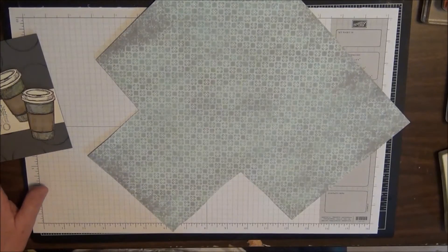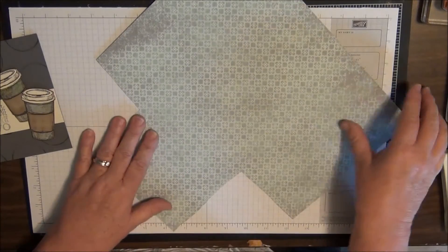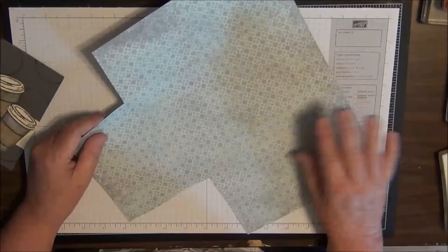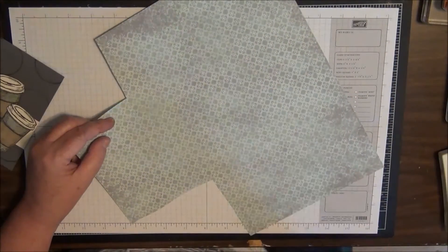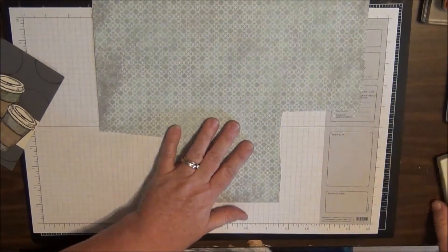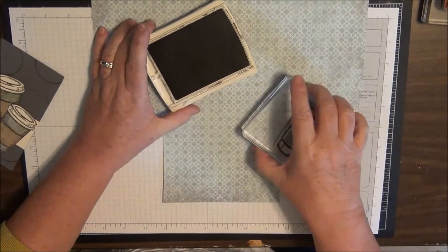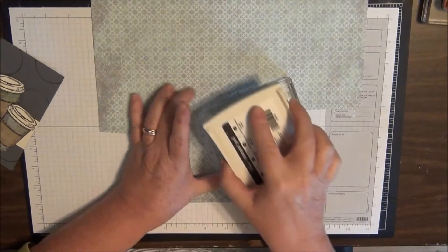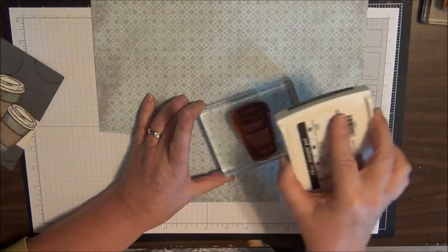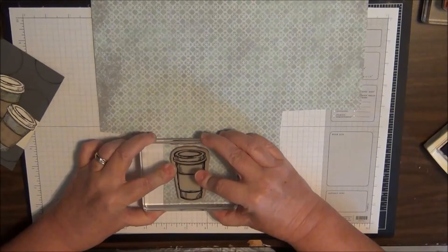It's a great time to stock up. The designer series paper you see in the catalog, once you get it in your hot little hands, looks so gorgeous - the pictures just don't do it justice. So what I'm going to do with my Early Espresso is stamp my coffee cup. I'm going to tap my stamp pad onto the image and stamp it once firmly.